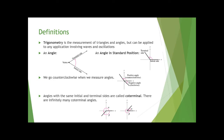An angle has a vertex — that little corner — and two sides: a terminal side and an initial side. Terminal is where it ends. You measure your angle from the initial side to the terminal side. When an angle is in standard position on an xy-plane, the initial side is always the x-axis, and you go counterclockwise to get to the terminal side. Going clockwise gives a negative angle.